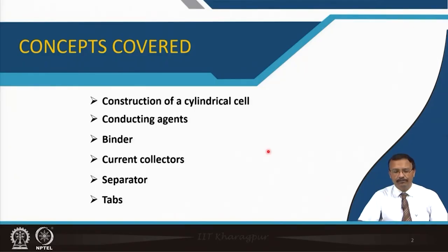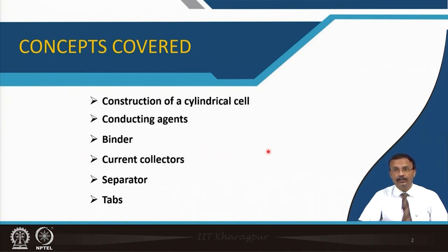The construction of a cell will be described first. Then the conducting agent — what their role is — will be highlighted, followed by binder, then current collectors, separators, and also during cell construction you need to have tabs. That will also be introduced along with the materials that we usually use.